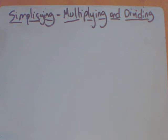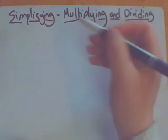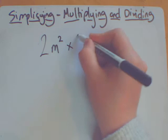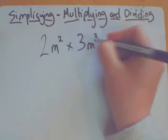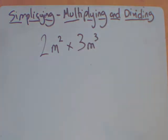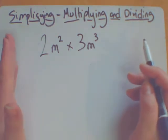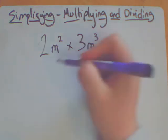Hi again, welcome to another video. This one is simplifying, however this one is to do with multiplying and dividing. Let's take our first question. We've got 2m squared multiplied by 3m cubed. So you have to do two things. We're going to do the numbers first, then I'm going to worry about the letters.